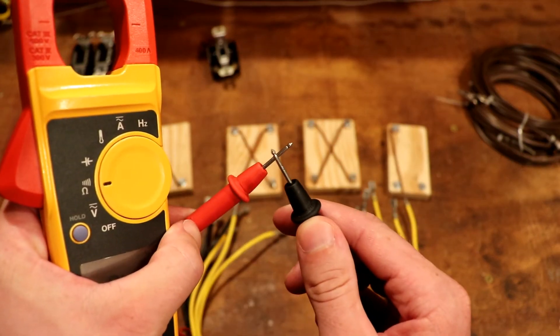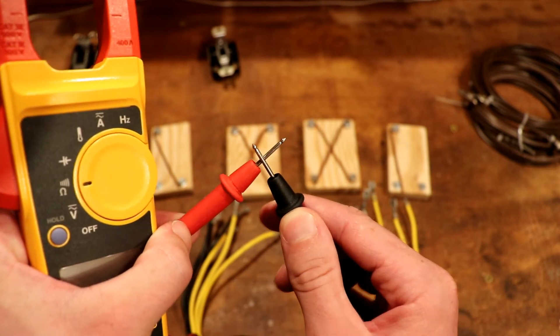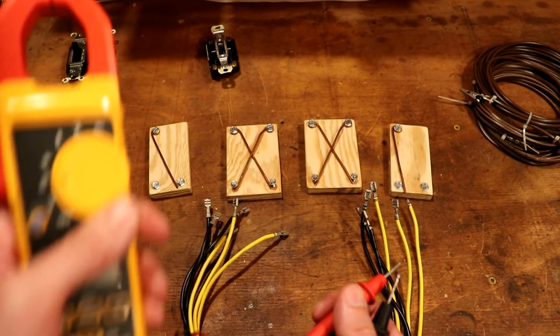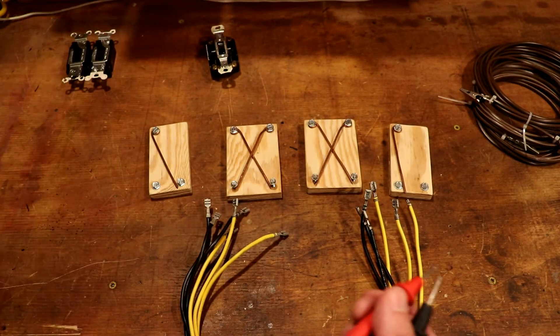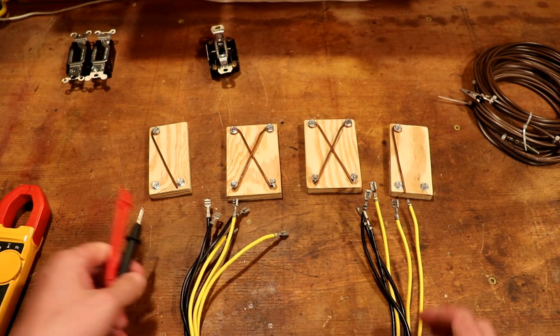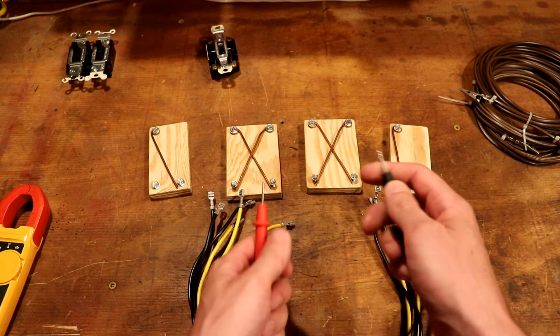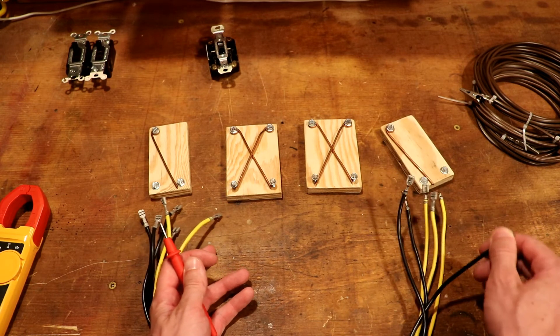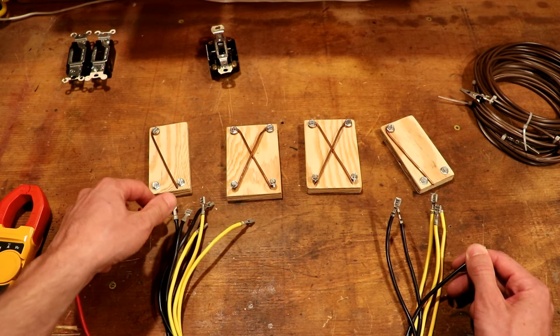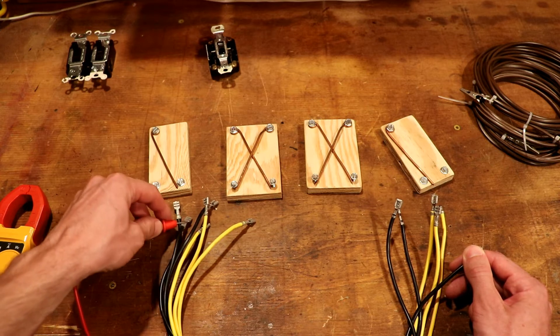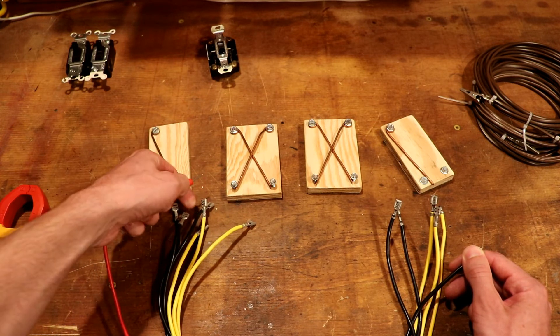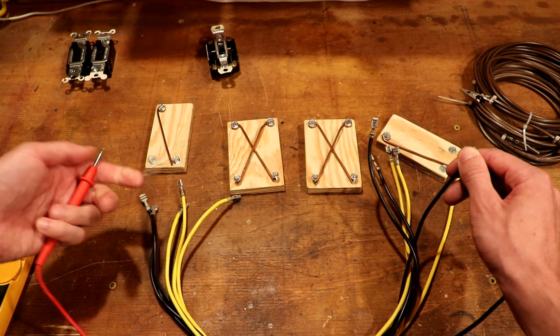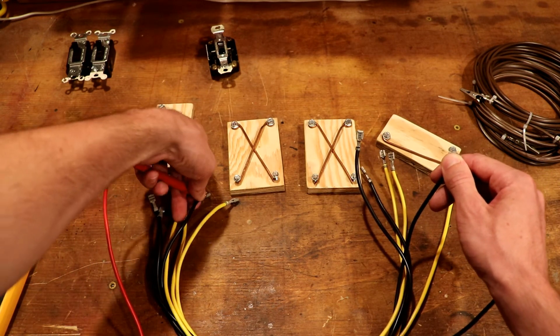When I touch these two leads together, it beeps to let us know that electricity can flow through there. It doesn't flow much electricity, it's just powered by a couple batteries. I'm going to put one lead on a wire sticking out of this box over here and then on this box right here, I'm going to keep touching around until I find the wire that makes it beep.